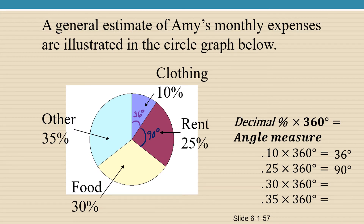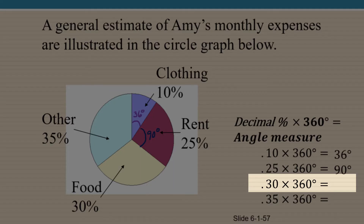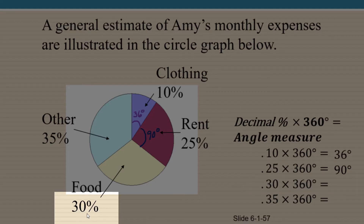Next, we're going to look at the food category. 30% can be written as a decimal as 0.30. Notice how the decimal place is moved two places to the left when we write a percent as a decimal. That's because percent means per 100, or divided by 100.